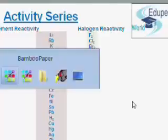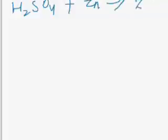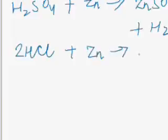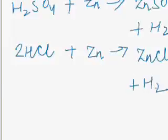Let us discuss this with the help of examples. Sulphuric acid (H₂SO₄) is reacting with zinc and it will produce zinc sulphate (ZnSO₄) plus hydrogen. Also, 2HCl is reacting with zinc and it is producing zinc chloride plus hydrogen. This confirms that metals above hydrogen in the activity series can displace hydrogen, but this does not apply to metals occurring below hydrogen in the activity series.